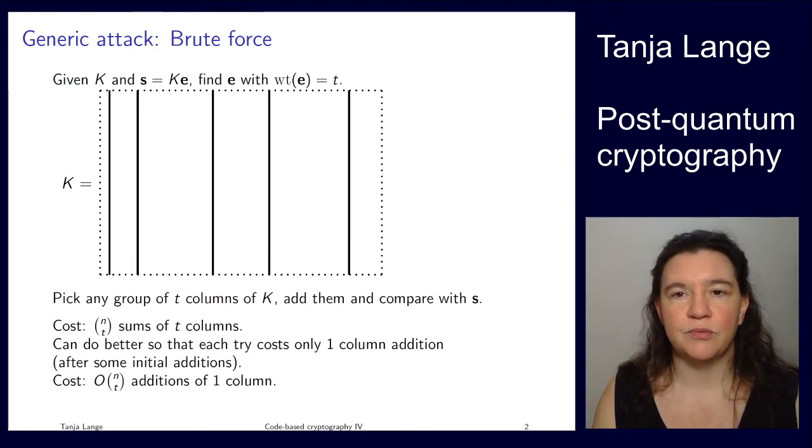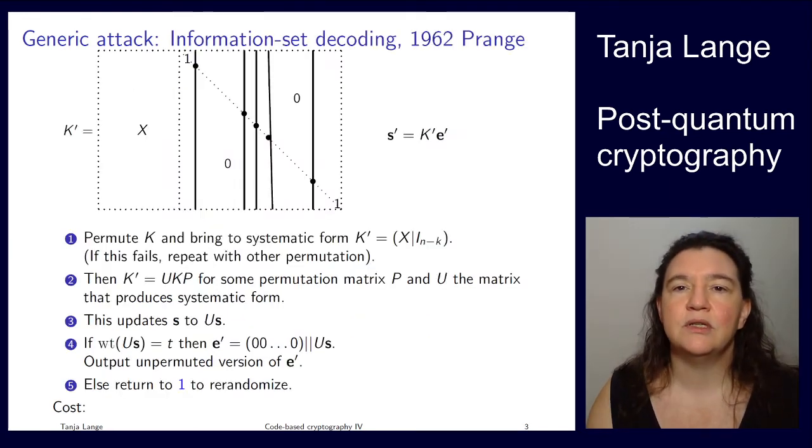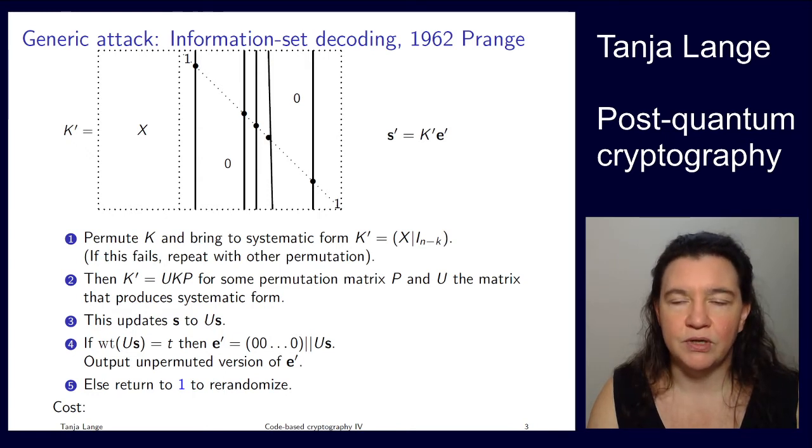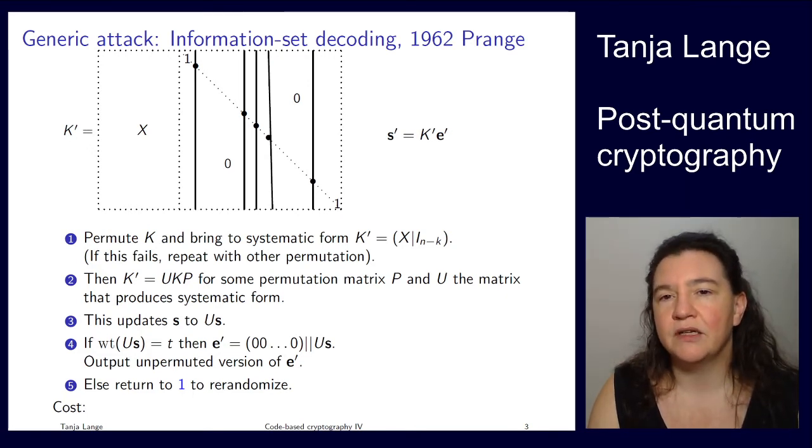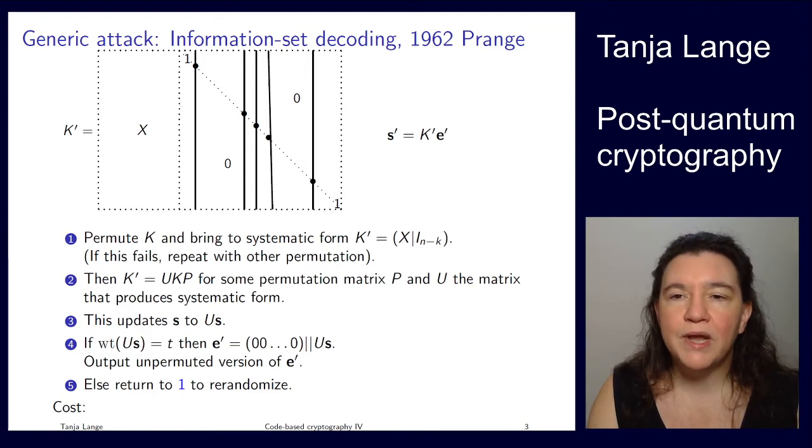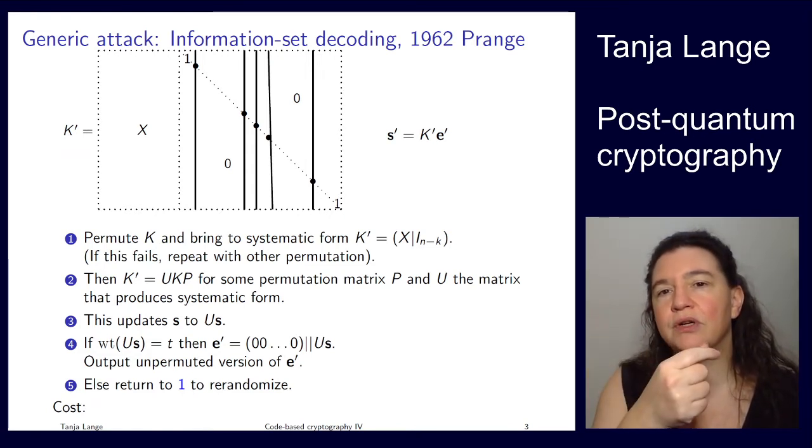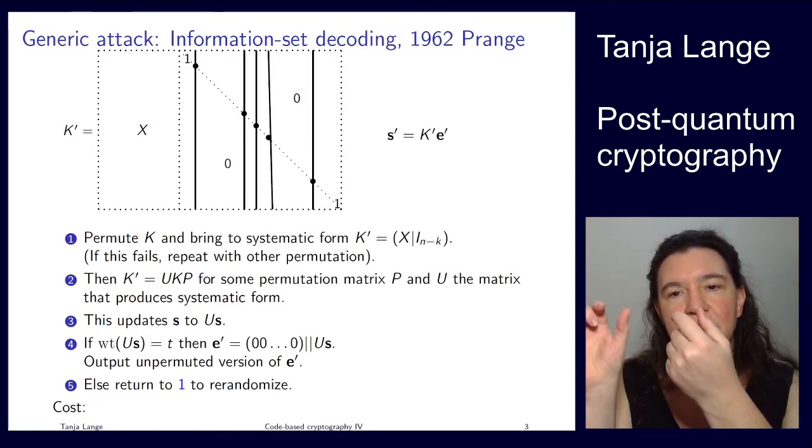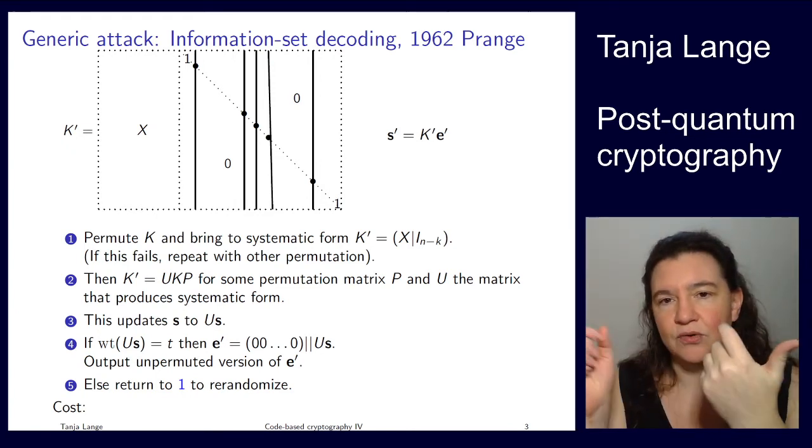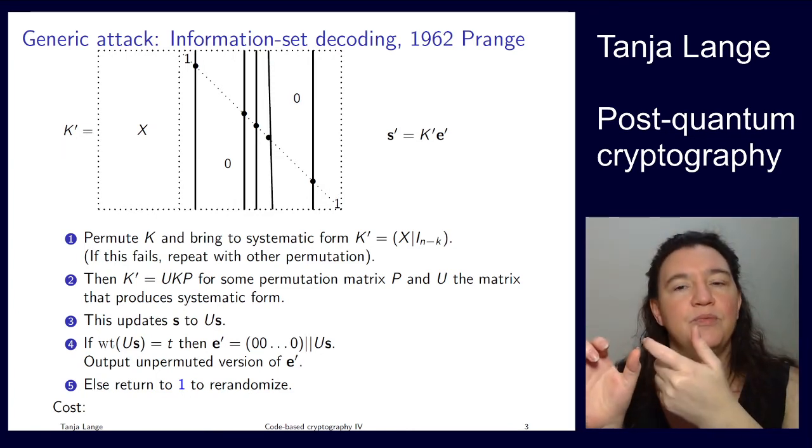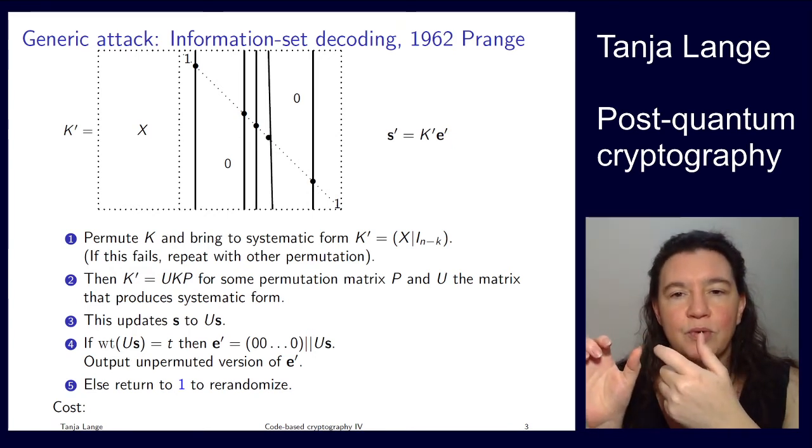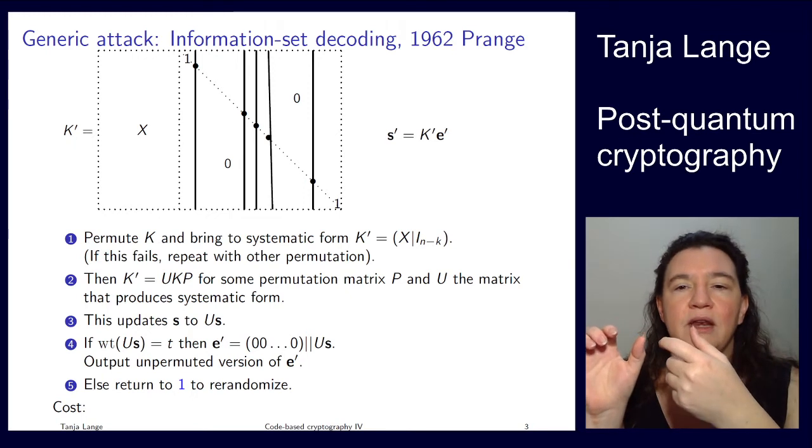Already before code-based crypto came around, we had some better algorithms. This goes back to 1962 and is called information set decoding. Prange made this algorithm purely in the setting of coding theory to analyze how to decode random codes. When you remember the unit where I showed how to turn syndrome decoding into regular decoding, one way to turn the syndrome into an input to a regular decoder was to expand the syndrome by putting zeros in the front and then s for the syndrome.